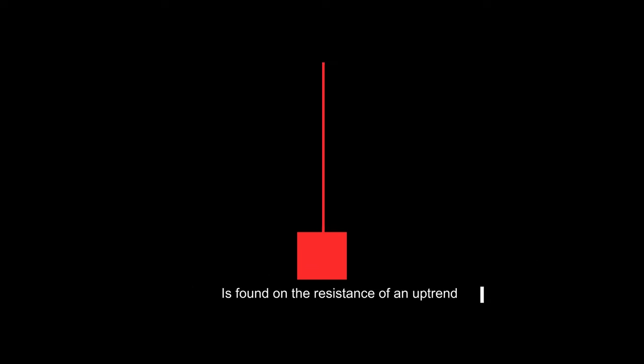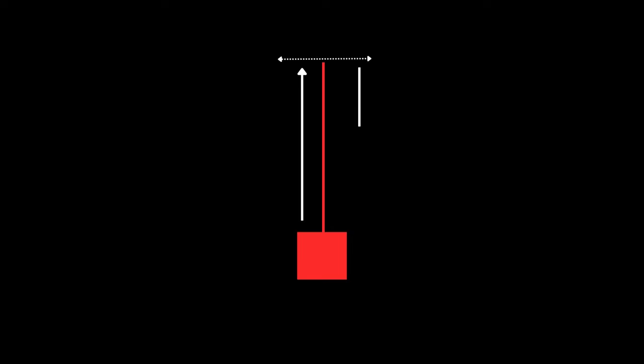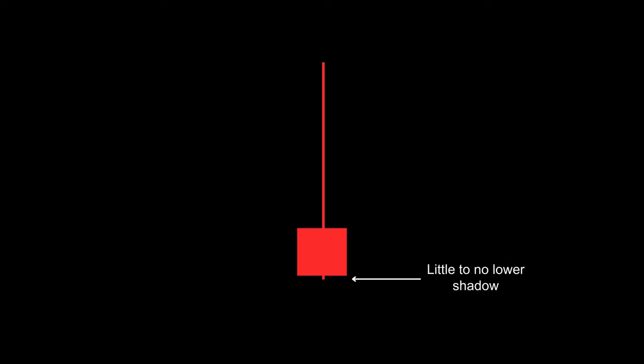The shooting star candlestick is another type of hammer candlestick — more like an inverted hammer — found at the resistance of an uptrend, and it usually drives an uptrend to a downtrend. The shooting star is formed when the price opens, buyers push the price upward, but sellers take control and drive the price downward to its closing price. A shooting star with a greater success rate has a small body closer to the lows, a long upper shadow at least three times longer than its body length, and little to no lower shadow.